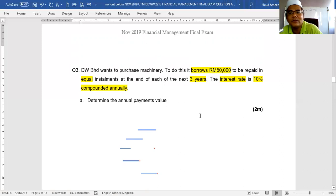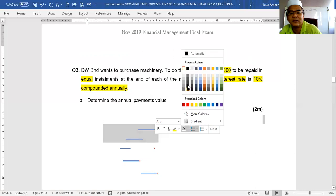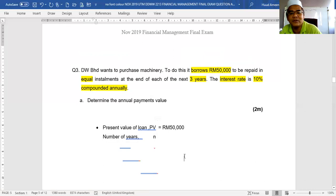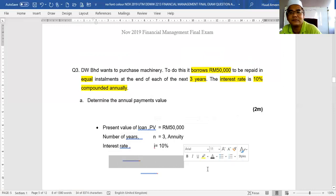Annual payment value. That means we have to pay 3 times or 3 years: year 1, year 2 and year 3. So the annual payment value, what is the answer? As I said, your present value is 50,000. Number of years is 3. This is the annuity, so highlight this is annuity series. The interest rate, what interest rate figure? 10%. I is 10%.